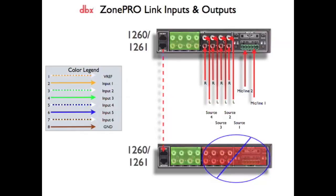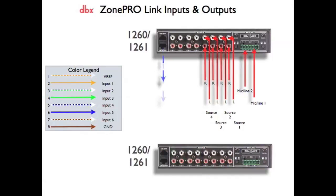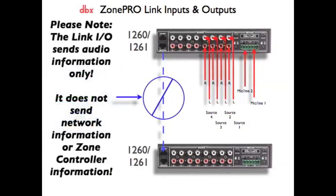The audio between the Link Output and Link Input connections is one way only. It travels in the direction from Link Output to Link Input. This link connection sends audio information only. It does not send network data information or ZoneController information.